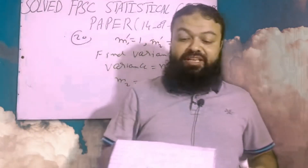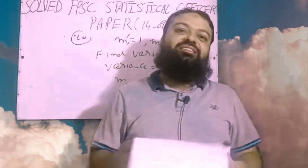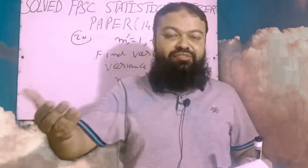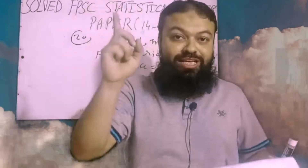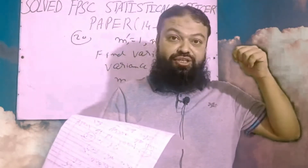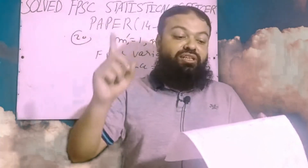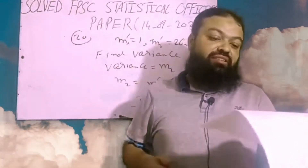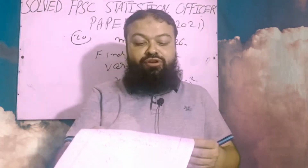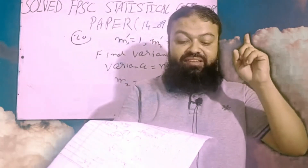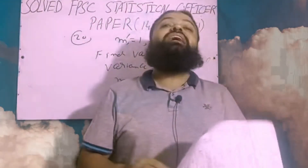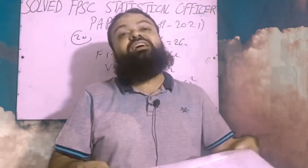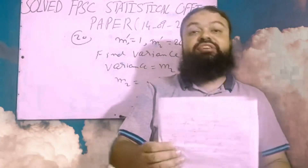Question number twenty-one: from index numbers, which is the most suitable average for the chain-based method? When calculating link relatives, the geometric mean is the most suitable. Question number twenty-two: for the consumer price index number, from where do we collect the data? The data is collected from retailers — retailers is the correct option. Question number twenty-three: which formula is used in the consumer price index? Laspeyres index number is the correct option — whenever we calculate CPI, we use Laspeyres index.